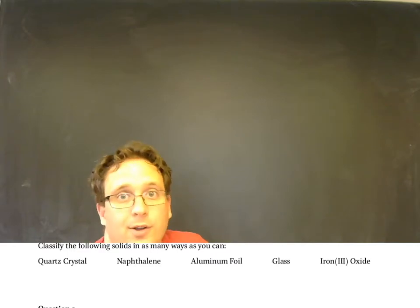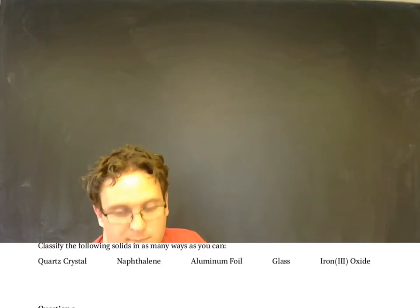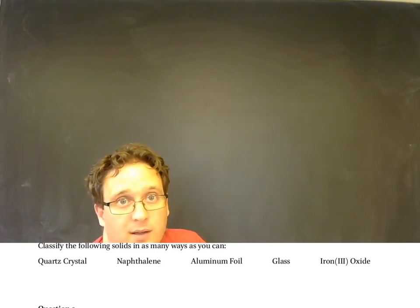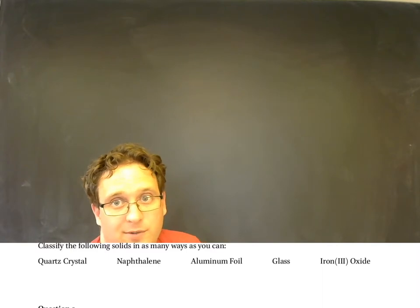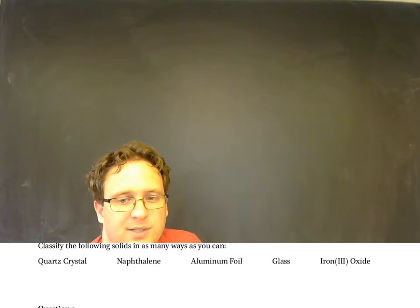Aluminum foil is crystalline. Metals are crystalline and it's a metallic bond. All metals involved there. Even if it's not pure aluminum, maybe it's an alloy of aluminum, it's still all metals.